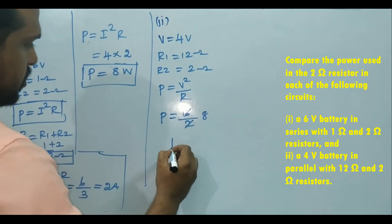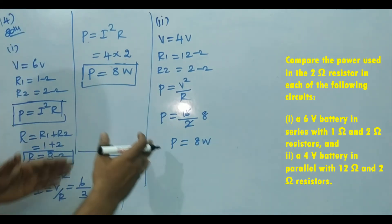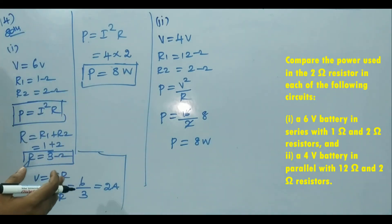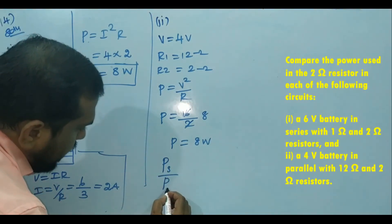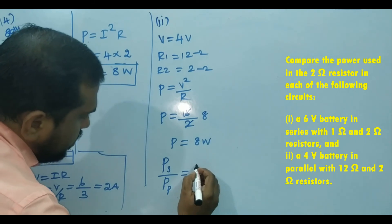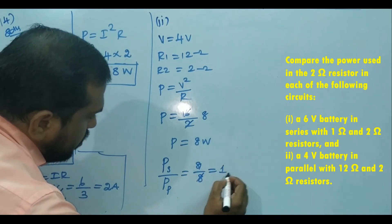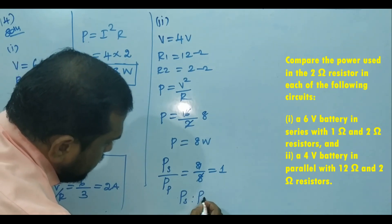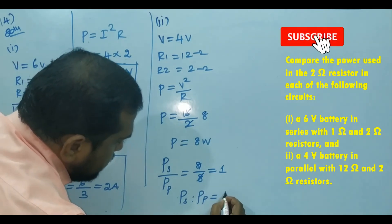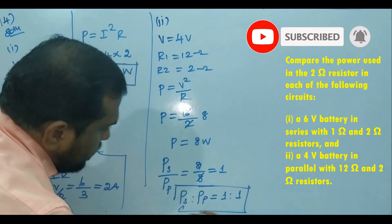They're asking to compare the series and parallel power. So power in series Ps, power in parallel Pp. Then 8 by 8, then it becomes 1. So the ratio of series and parallel is 1 is to 1. That is the answer for this question.